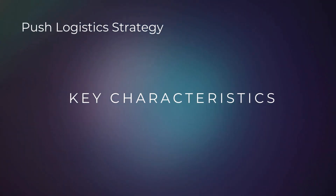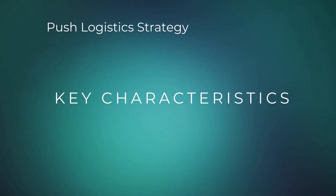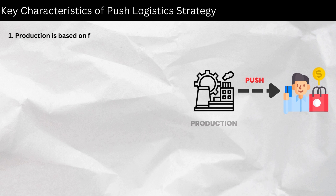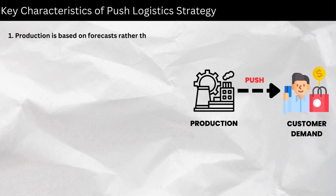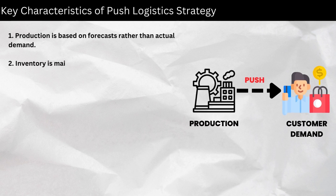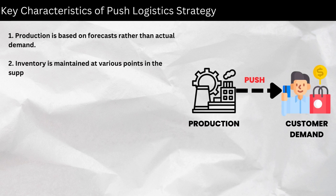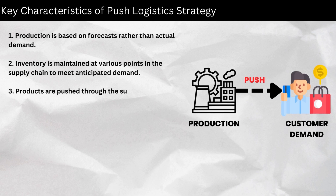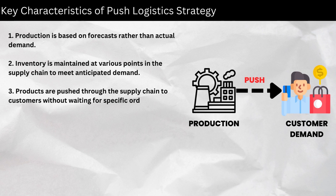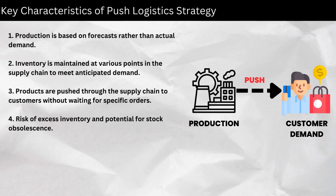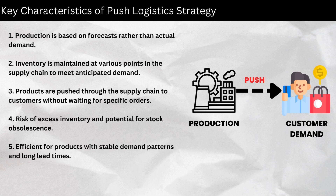Key characteristics of push logistic strategy: one, production is based on forecasts rather than actual demand; two, inventory is maintained at various points in the supply chain to meet anticipated demand; three, products are pushed through the supply chain to customers without waiting for specific orders; four, risk of excess inventory and potential for stock obsolescence.